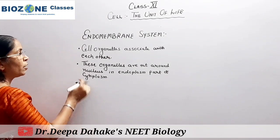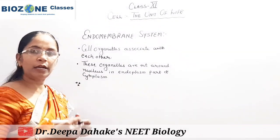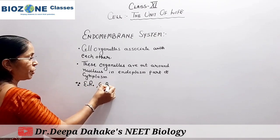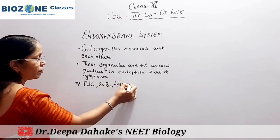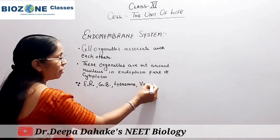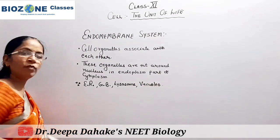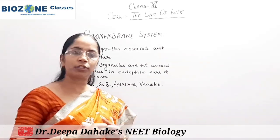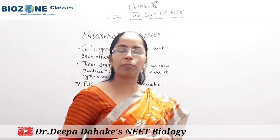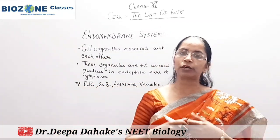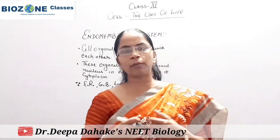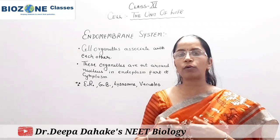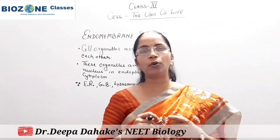The most important part: which cell organelles are included under the endomembrane system? Endoplasmic reticulum, Golgi body, lysosome, and vacuoles — these four cell organelles are included under the endomembrane system because they are all interconnected with each other functionally. Mitochondria, chloroplast, centrosome, ribosomes, and other cell organelles are not interconnected with each other, so mitochondria, chloroplast, and centrosome are not included under the endomembrane system.